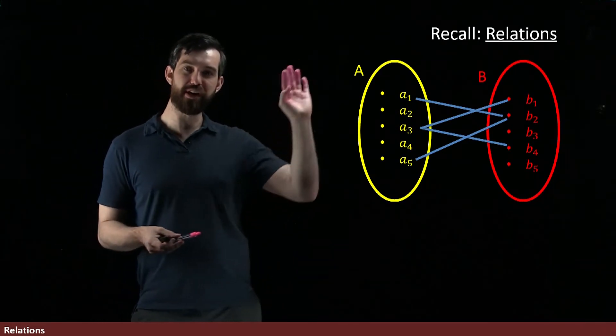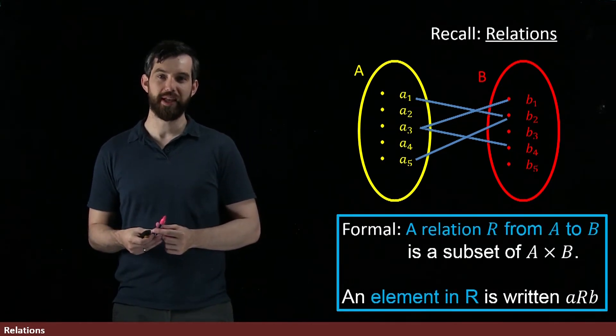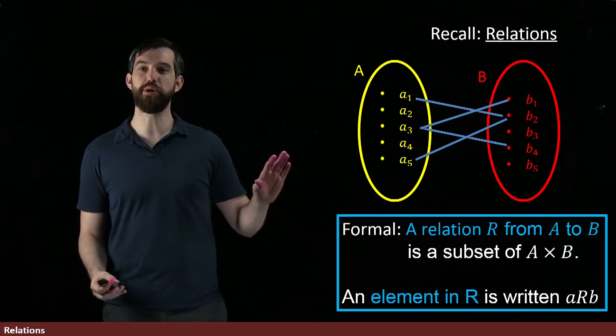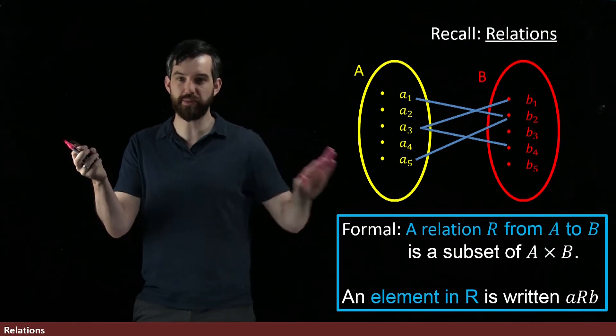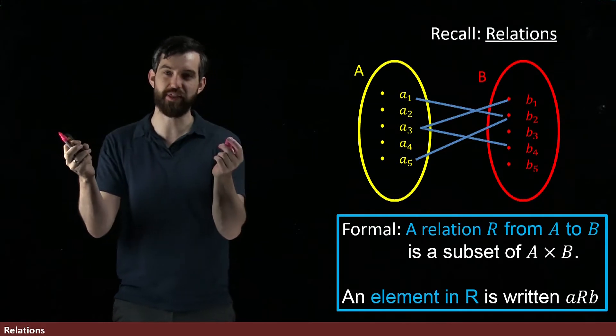And then our formal definition for what a relation was is going to be the following. It is a subset of the Cartesian product. That is, I look at all pairs, something in A, something in B. That's what the Cartesian product is. Pairs where you choose a first thing in A and a second thing in B.